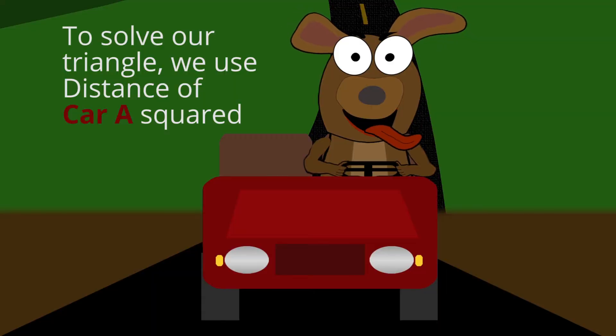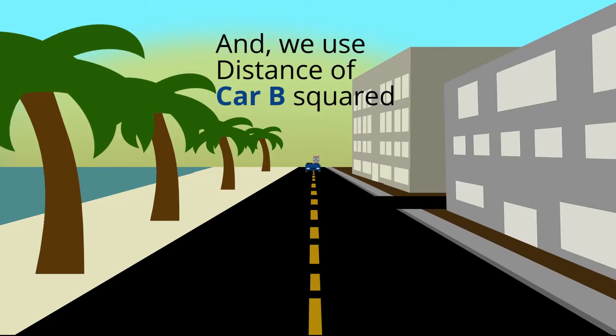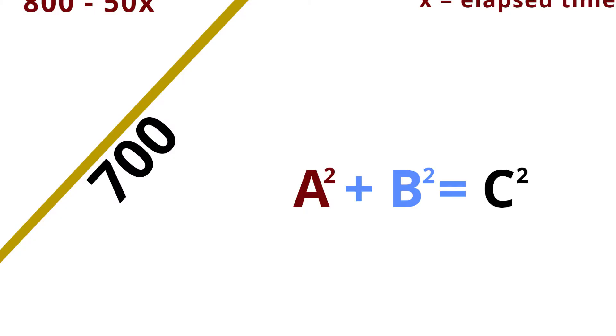What we have here is the distance from car A squared plus the distance of car B squared is going to equal, remember, C squared? A squared plus B squared equals C squared? Well, the 700 miles that the two cars are apart is C. That is the length of our hypotenuse.